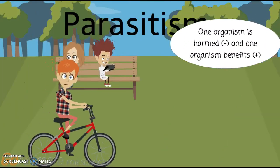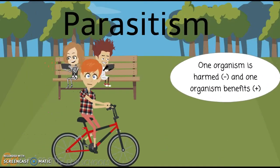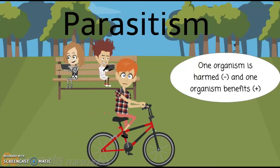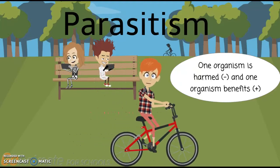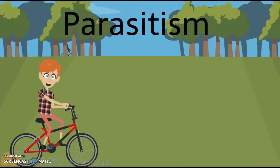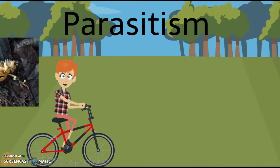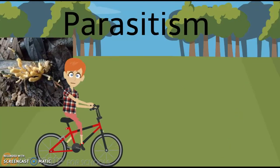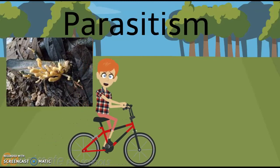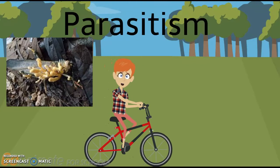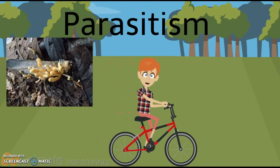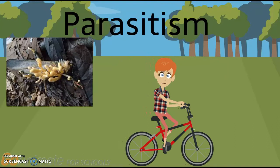Parasitism is an example of a symbiotic relationship where one organism benefits — the parasite — and the other organism is harmed, which would be called the host. In this example of parasitism, the cordyceps fungus is the parasite, which uses and ultimately kills the insect so that the fungus can spread its spores. The fungus uses the insect's body to grow, and the fruiting body of the fungus emerges from the dead body of the insect.